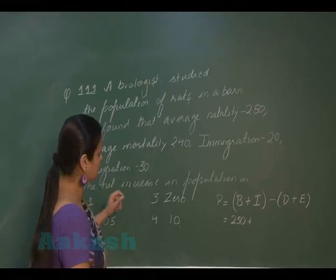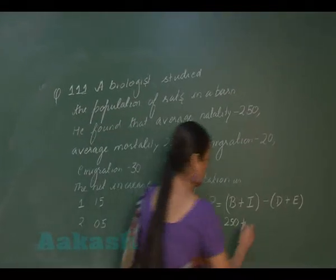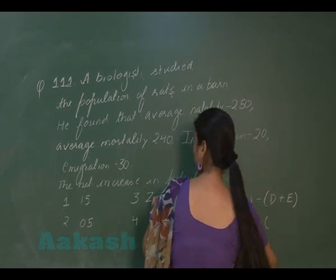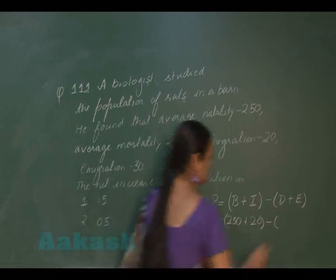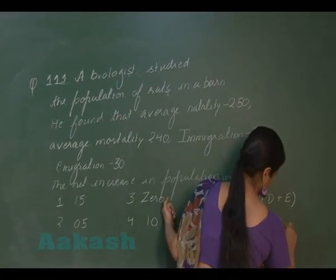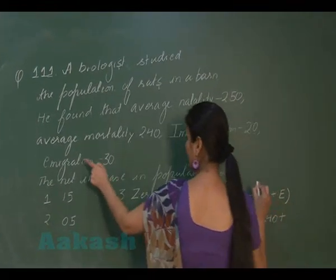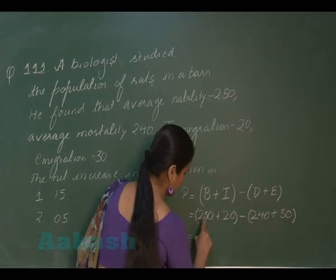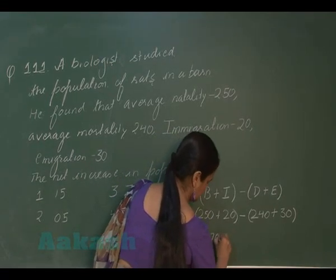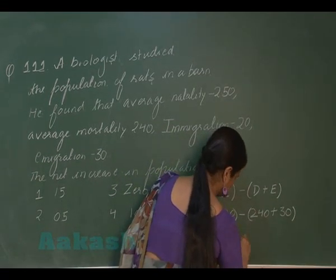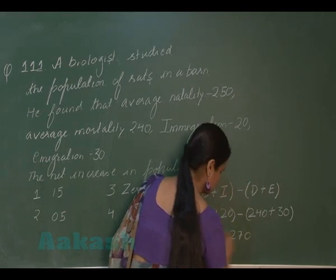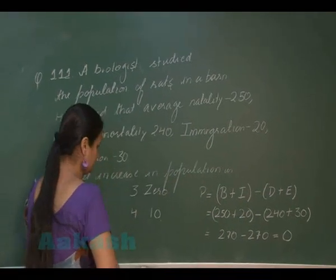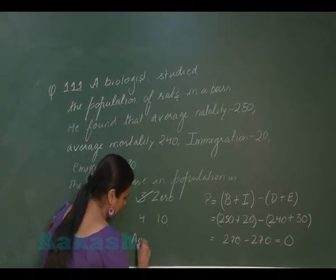Immigration is 20. Now coming to the number of deaths, mortality is 240. And the number of emigrants is 30. So this comes out to be 270 minus 270, so the net increase in the population size here is 0. The right answer is option number 3.